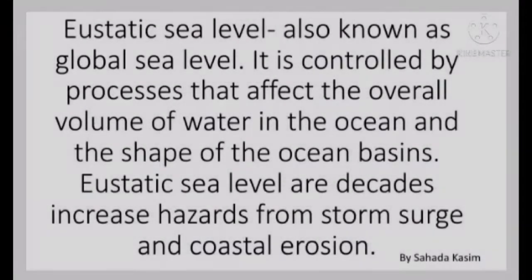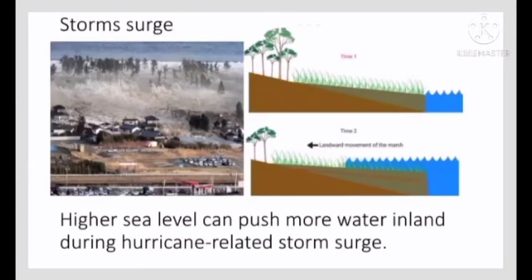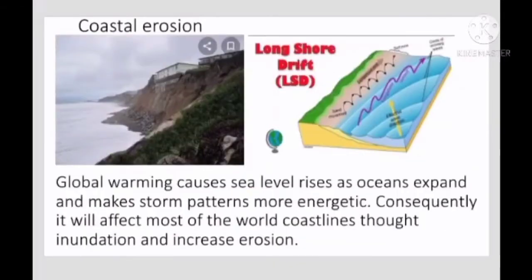Eustatic sea level, also known as global sea level, is controlled by processes that affect the overall volume of water in the ocean and the shape of the ocean basin. Eustatic sea level increases the hazard from storm surge and coastal erosion because higher sea levels can push more water inland during hurricane-related storm surge. Global warming causes sea level rise as the ocean expands and makes storm patterns more energetic, consequently affecting most of the world's coastlines through increased inundation and erosion.